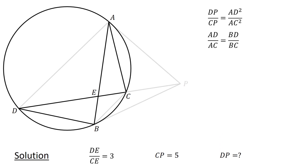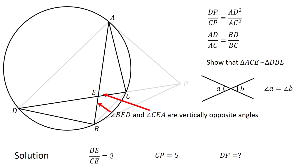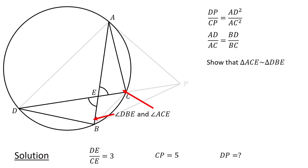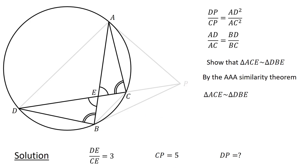Next, consider triangles ACE and DBE. Let us show that these triangles are similar. Consider angle BED and angle CEA, which are vertically opposite angles; since vertically opposite angles are equal, we have angle BED equals angle CEA. Next, consider angle DBE and angle ACE, which subtend the same arc; since angles subtending the same arc are equal, we have angle DBE equals angle ACE. Therefore, by the AA similarity theorem, the two triangles are similar. Since corresponding sides of similar triangles are proportional, we have AC over BD equals AE over DE, or BD equals AC times DE over AE.